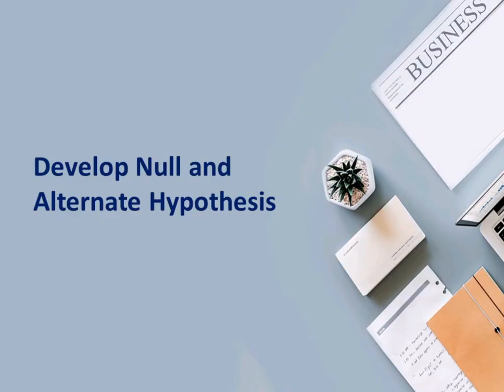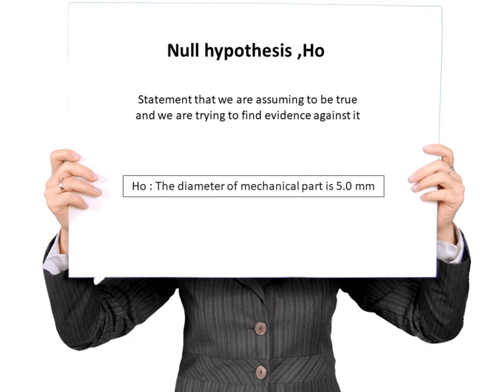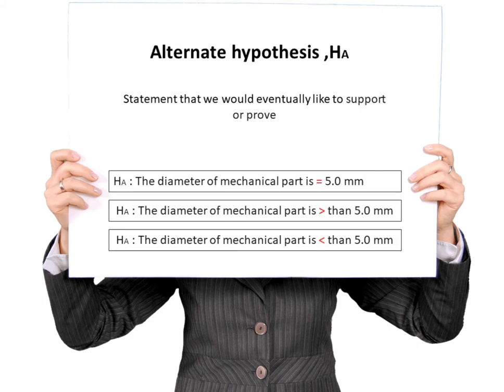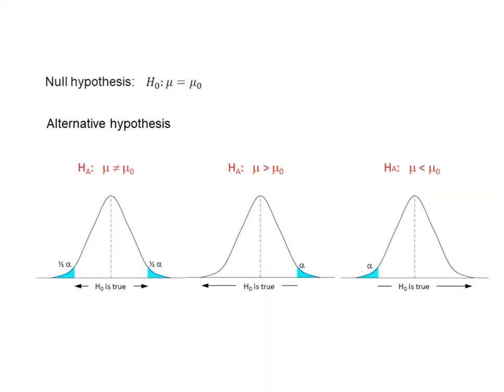Develop null and alternate hypothesis. What is null hypothesis? Null hypothesis, or H sub 0, is the statement that we are assuming to be true and we are trying to find evidence against it. What is alternate hypothesis? Alternate hypothesis is the statement that we would eventually like to support or prove. For a 1 sample Z test, the null hypothesis states the population mean equals the hypothesized mean. In the alternative hypothesis, there are three options: the population mean differs from, is greater than, or is less than the hypothesized mean.